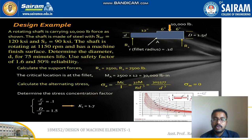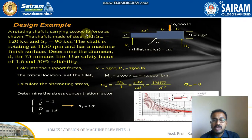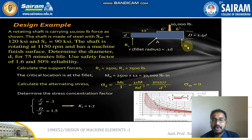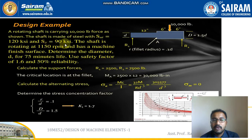Let us move to the diagram given by the question. A rotating shaft is carrying 10,000 LB force as shown. This is a bending force because the simply supported reaction is given. The shaft is made of steel with ultimate stress equal to 120 and yield stress equal to 90.